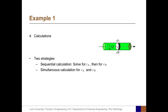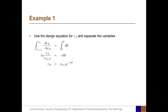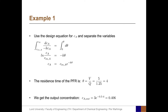There are two strategies: solve sequentially (first C_A, then C_B) or simultaneously. Here we focus on C_A. Separating variables analytically, all C_A terms go to the left and residence time terms to the right. Finding the primitive function and inserting boundaries gives C_A = C_A,in · e^(−k·θ). With θ = V/q = 5/1.25 = 4 min, the output concentration is C_A,out = 3 · e^(−0.5 × 4) = 0.406 mol/m³.